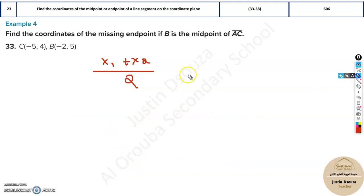The same thing goes to the y coordinates as well. It's y1 plus y2 divided by 2. This will be equal to the midpoint. So xm over here will be the x midpoint and ym would be the y midpoint. So this is the thing.